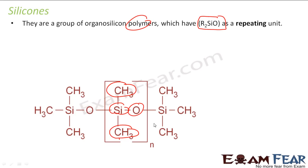We will study more about this in the organic chemistry chapter, but let's understand silicones. It has to be R2SiO in a repeating unit — there are two R groups and they have to be equal. For example, here both are ethyl, so both have to be ethyl, then SiO, and it has to be repeating.